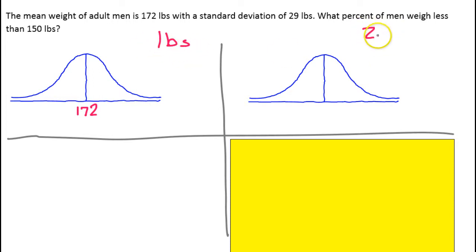This graph is going to be for z-score. The mean z-score is always zero. What percent of men weigh less than 150 pounds? That's less than the mean, so I'm going to put that on the left-hand side. Here's 150. We're going to have to figure out what the z-score for that is. Right now, we don't know. We'll do that here in a moment.